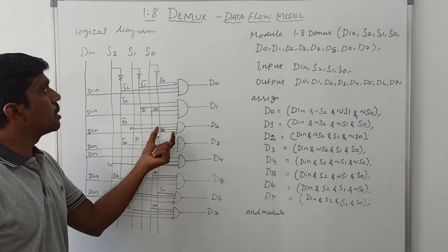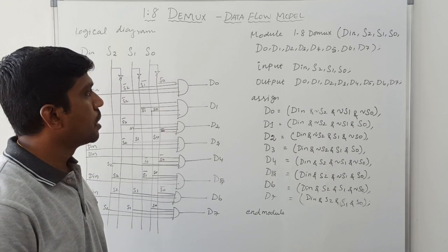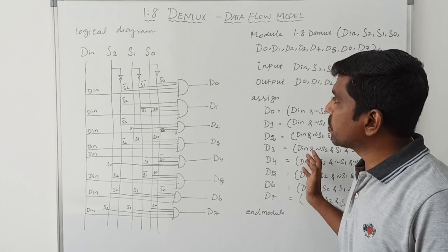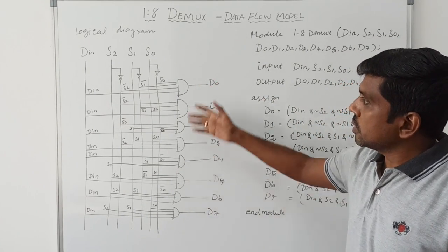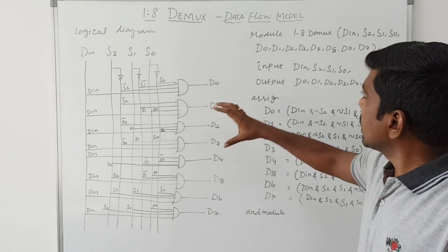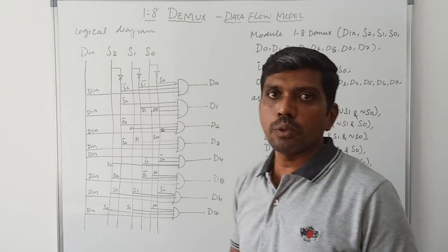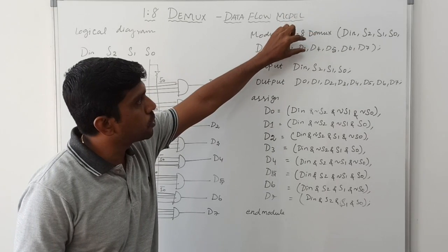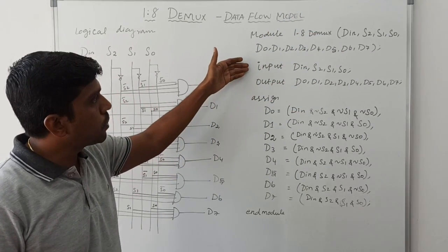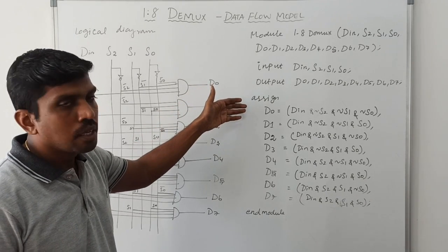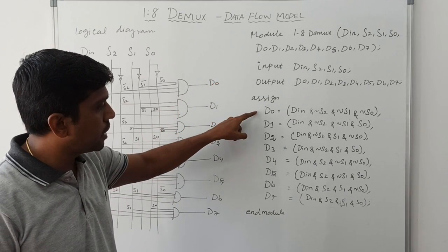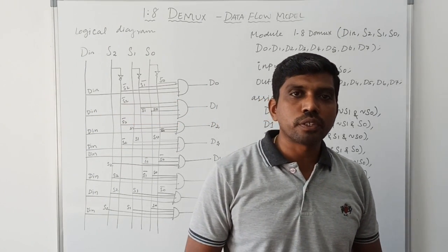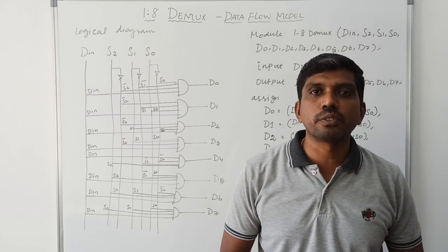This is the simple program of a 1-to-8 DMUX. First you draw the block diagram, then write the truth table. With the help of the truth table you draw the logical diagram, which is then implemented in Verilog HDL code. You write the module and module name, declare the variables, assign input and output variables, then use assign statements for D0 to D7, and finally close with endmodule. Thanks for watching - if this is your first time, kindly subscribe and support us to make more videos. Thank you.